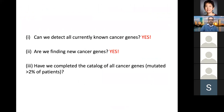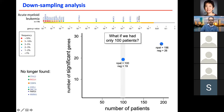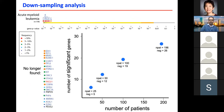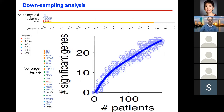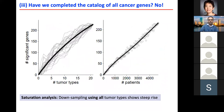We asked ourselves: have we completed the catalog of all cancer genes? To do that, we did a downsampling experiment. For example, looking at AML, these are the cancer genes found with 196 patients. But if we had only 100 patients, we find 19 significant genes; with 50 patients, 12; with 25 patients, 5. This curve shows that as we add more patients, we find more cancer genes. We did this for all tumor types and found that across all of them, more patients leads to more cancer genes. The pan-cancer analysis also finds more cancer genes as we add more cancers.